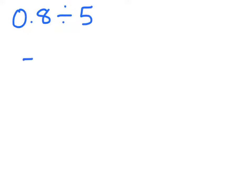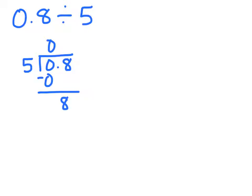Now we're going to move on to some more complex division — dividing decimals with one decimal place by a whole number when we need to regroup. Our first problem is 0.8 divided by 5. We'll begin by writing this in traditional long division form. In step 1, we divide the ones by 5: 0 divided by 5 is 0, leaving us with 8. Now, how many times does 5 go into 8? It goes in once. 1 times 5 is 5, leaving us with 3. We could stop here and have a remainder of 3 tenths.